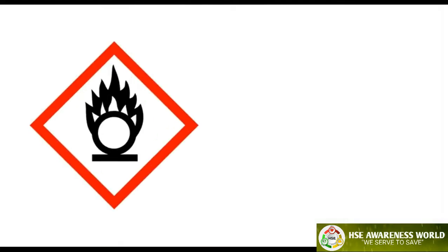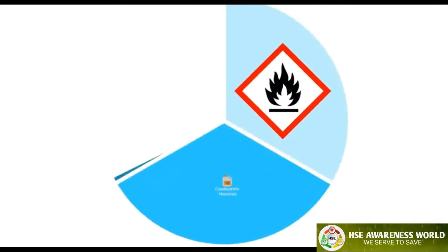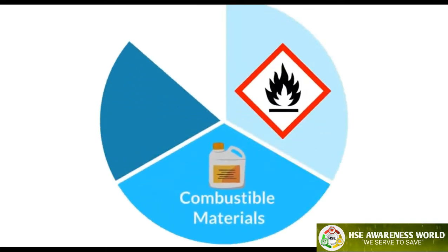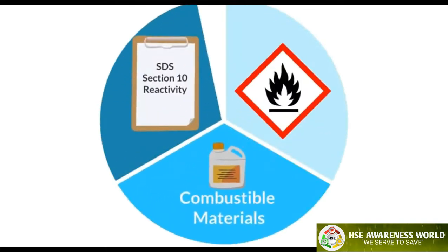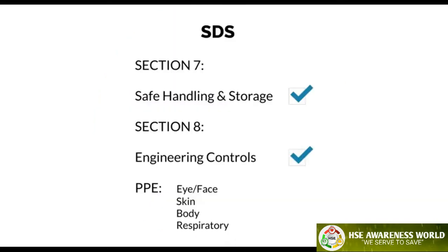The oxidation symbol is used on substances that can cause or intensify fire. The critical hazards are flammable and combustible materials and conditions listed in Section 10. Other considerations are listed in Sections 7 and 8 of the SDS.